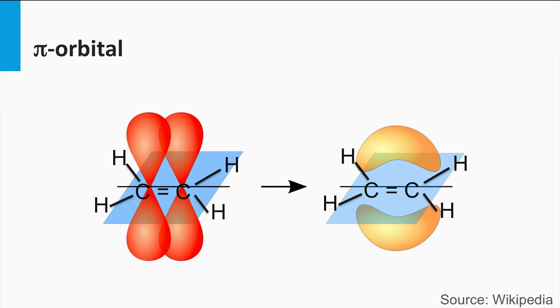Here we see an ethene molecule, which has three equivalent sp2 hybrid bonds with a bond angle of 120 degrees plus an electron in a pz orbital.